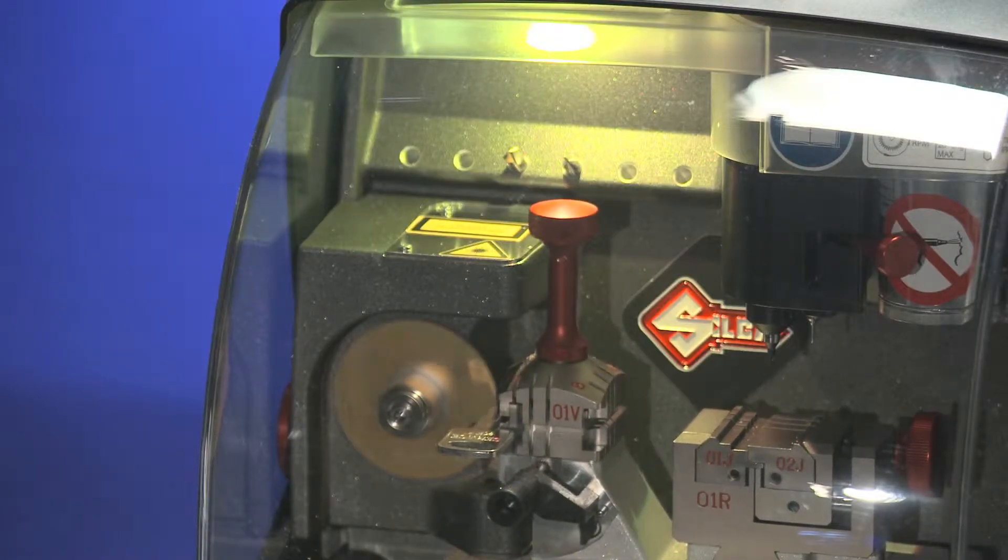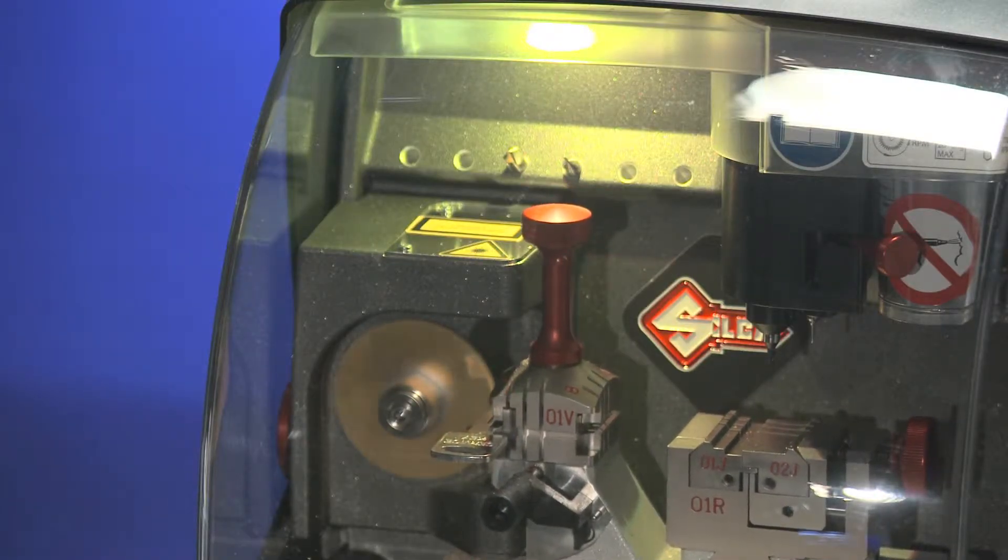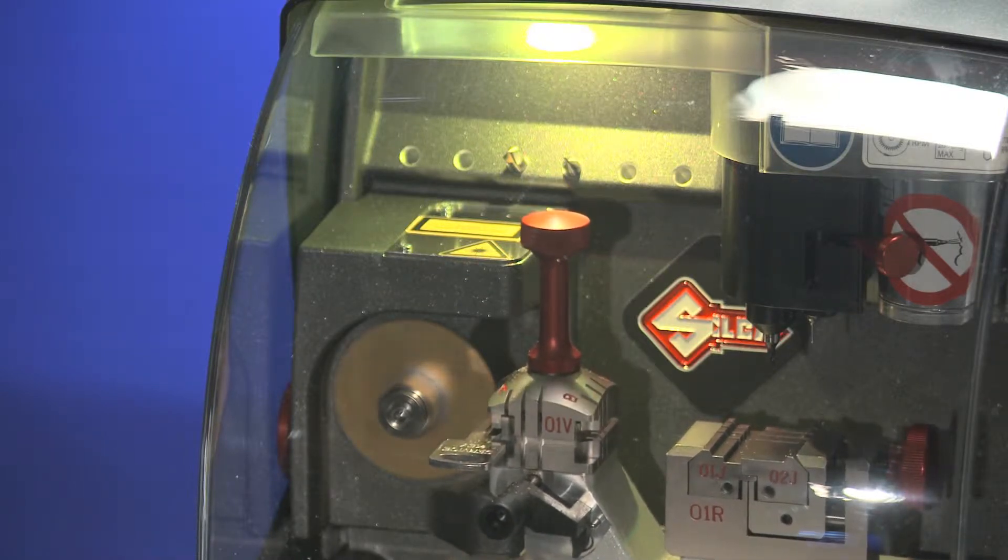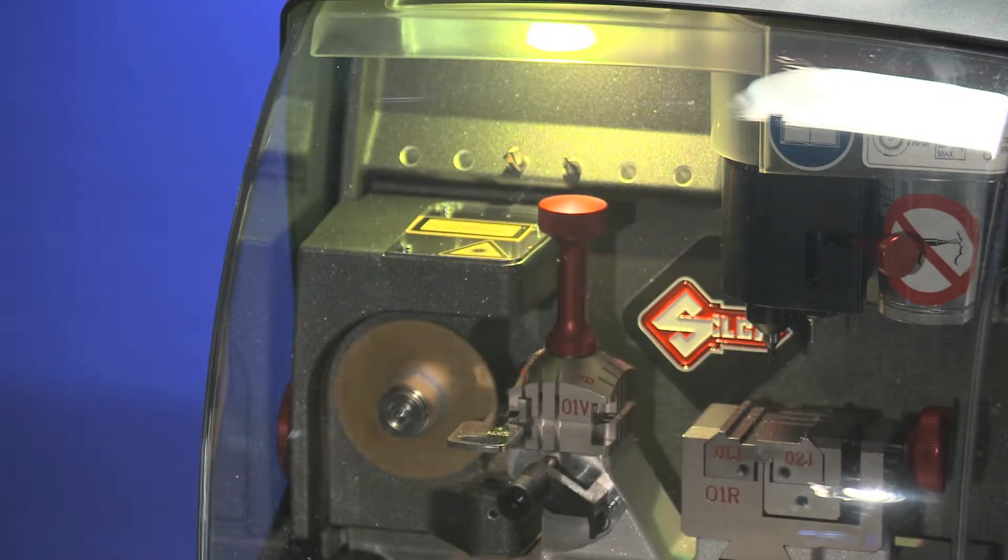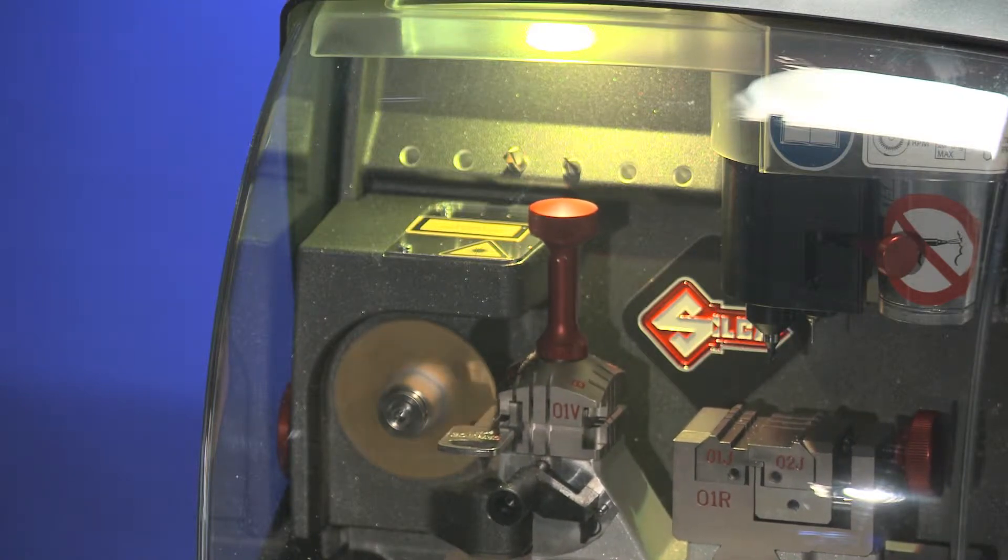The safety shield covers the working parts and contains chips during the cutting process, ensuring operator safety. It must be raised to clamp keys or to perform other operations such as calibration.